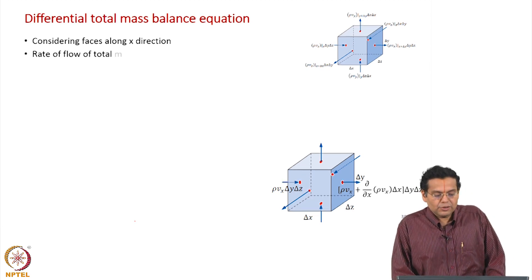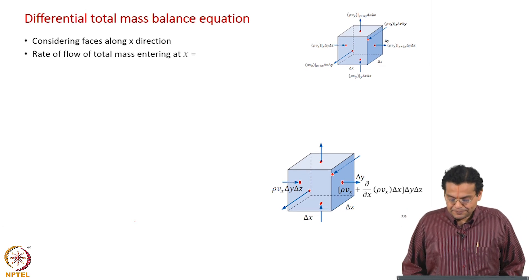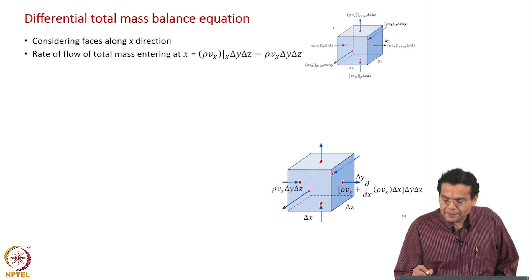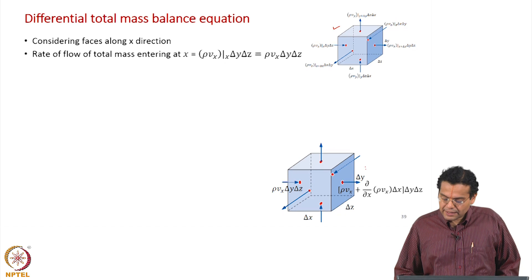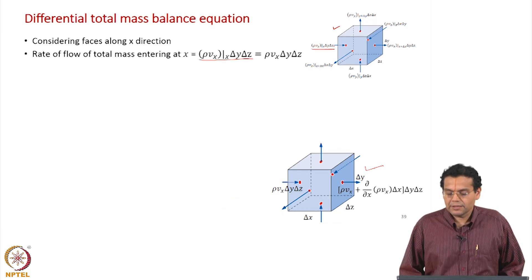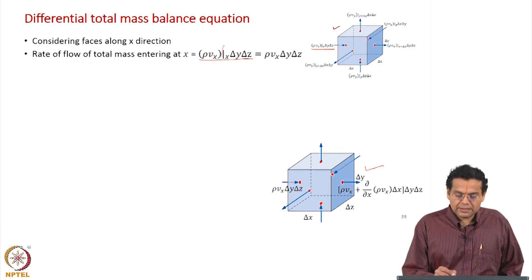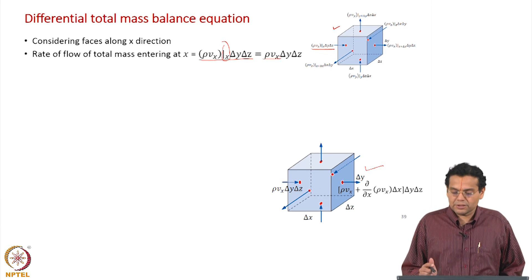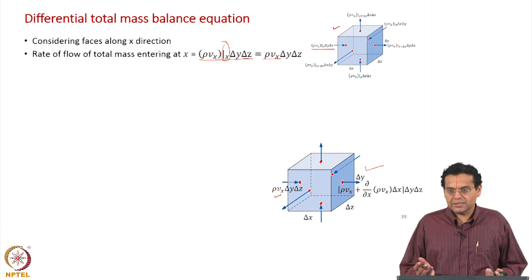We said the rate of flow of total mass entering at x equals ρv_x evaluated at x, multiplied by ΔyΔz. That is what is shown in the earlier diagram. The new control volume representation is shown here. The vertical bar and x are not usually shown; it is just written as ρv_x, with the implication that it is evaluated at x. The physical significance is the same; the representation is slightly different.